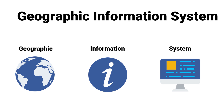Information System implies that we deal with software, hardware, and data or database. A geographic information system helps us understand our world, answer questions about our environment, and support us during decision making.